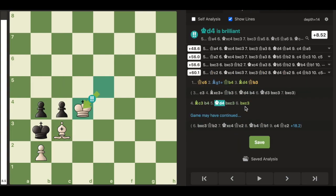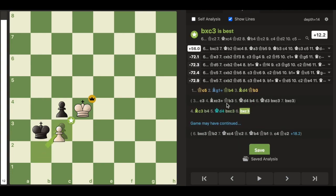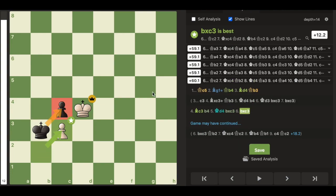If instead black plays the move b4 attacking the bishop, we have king to d4, and after pawn takes pawn takes, the black king is forced to move where he can't guard his pawn anymore, and white is again winning.